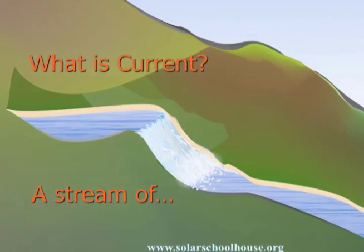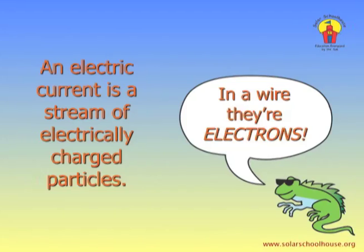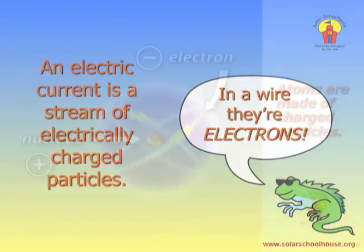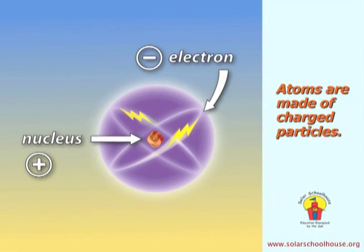But what exactly is this current we're talking about? We're used to a different type of current in our lives — the current in a river, the current of water. And that current is a stream of many, many drops of water. An electric current is a stream of many, many particles of electricity. Remember, everything in the world is made of incredibly tiny particles called atoms. Atoms are so small, you can't even see them with a standard microscope. And atoms themselves are made of even smaller particles, some of which are called electrons. Electrons are particles of electricity. Electrons have a negative electrical charge, and they orbit the center of the atom, which is called the nucleus.